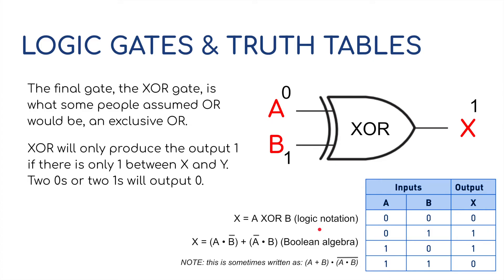And then, finally, we've got one called an XOR gate. It's basically an OR gate with this line around the back of it. The final gate, the XOR gate, is what some people assume the OR gate would be, an exclusive OR. XOR will produce the output 1 if there is only 1 between X and Y. Two 0s or two 1s will output a 0. As you can see here, it's what they call an exclusive OR gate. So 0 and 1 works. 1 and 0 works. But if we've got them both on, then it would lead to a 0. And again, like the OR gate, two 0s would equal a 0.